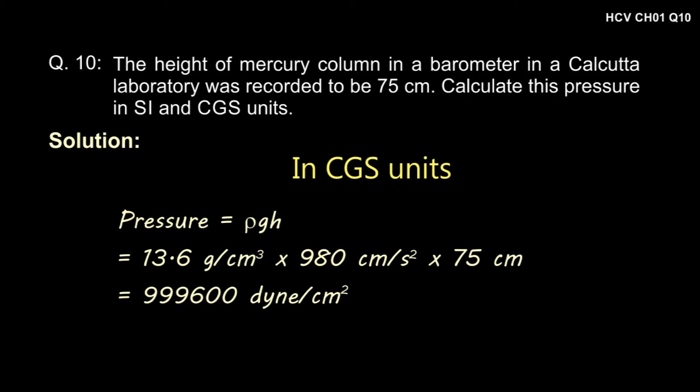Multiplying it we get 9,99,600 dyne per centimeter square, which is approximately 10 into 10 to the power 5 dyne per centimeter square.